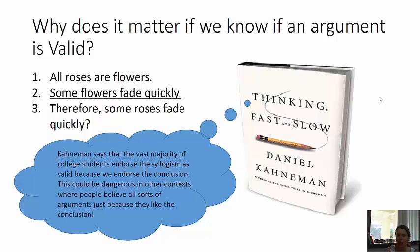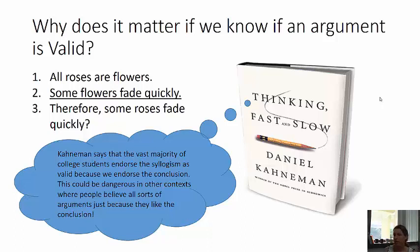They like the conclusion, and they say that must be valid. But it turns out this is not a valid argument, because it could be that the roses are not in the group of flowers that fade quickly — the roses are not part of that set. So this is not a valid argument, but students endorse it as valid because they like the conclusion.